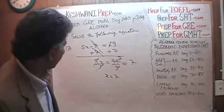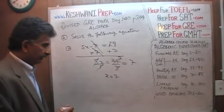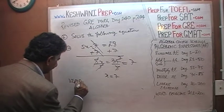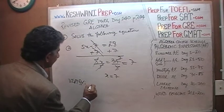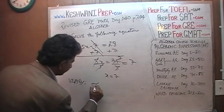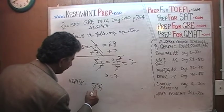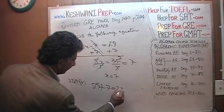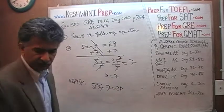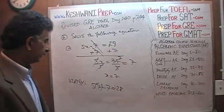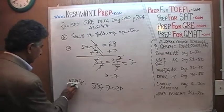Let's verify it very quickly. 5 times 7 is 35, and 35 minus 7 is indeed 28. It works.